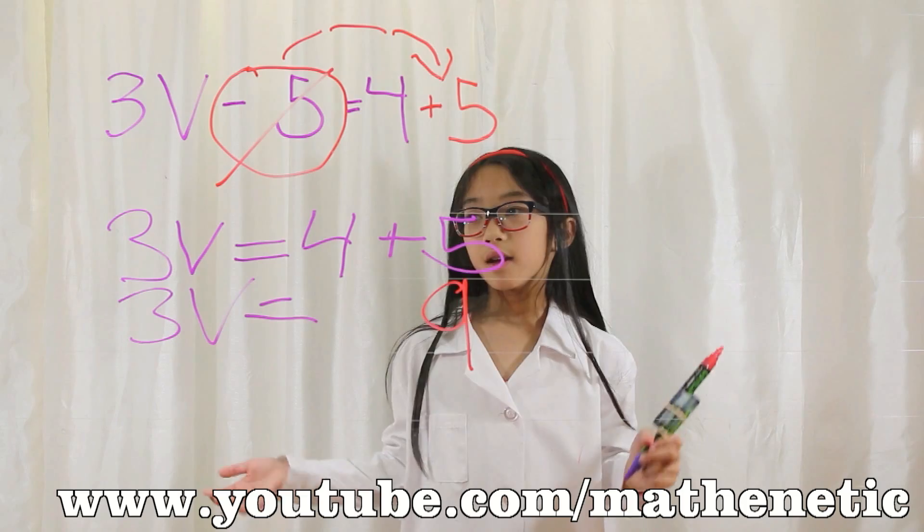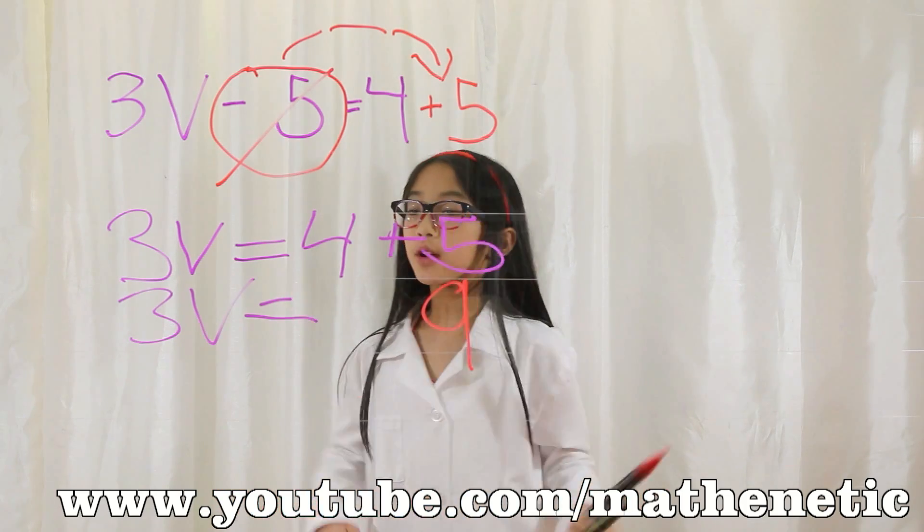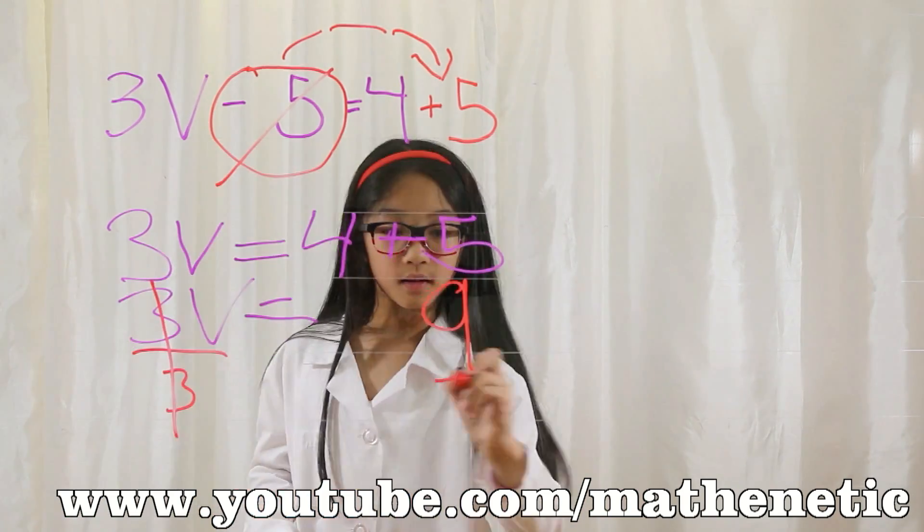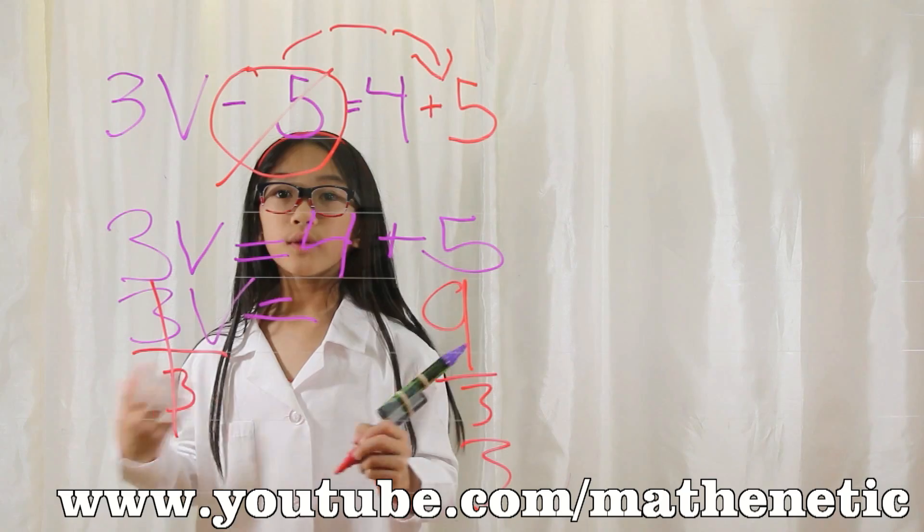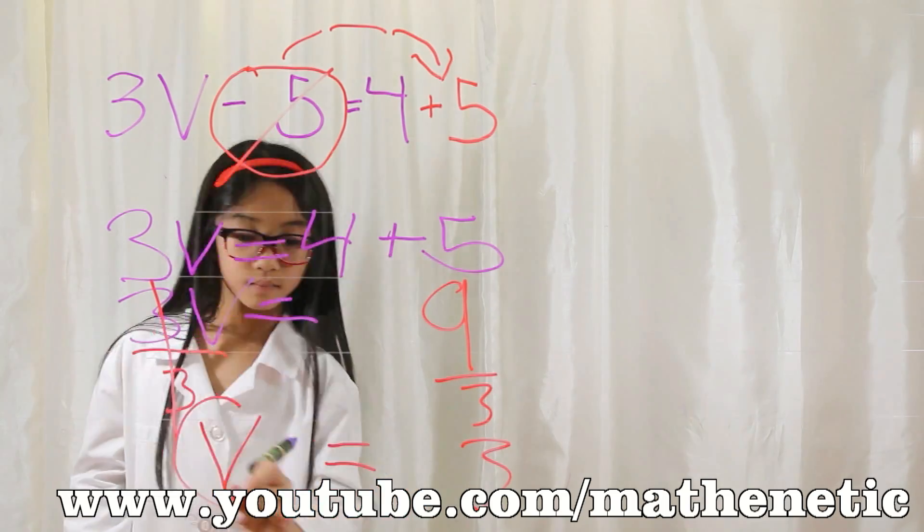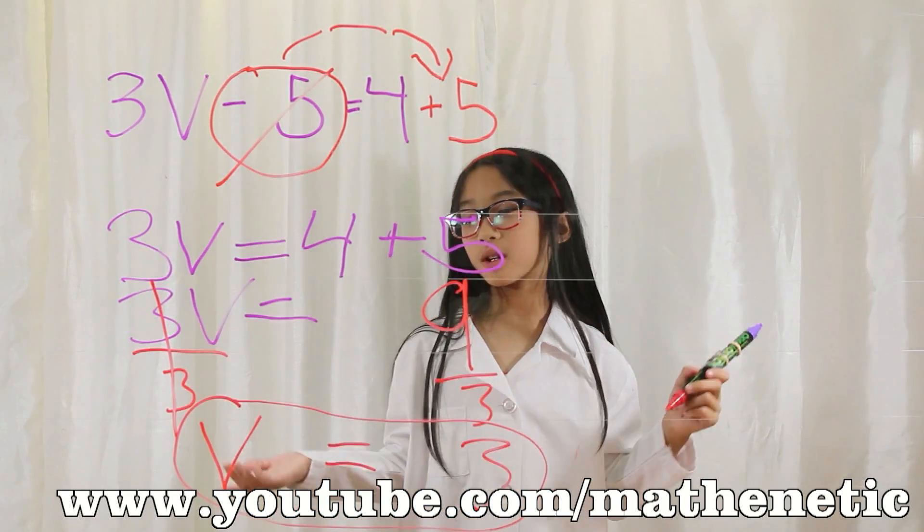But you're trying to solve for v, but you have 3v, therefore you have to divide it by 3 on both sides. So now all you have is a v and an equal sign. You bring that down. V is equal to 3.